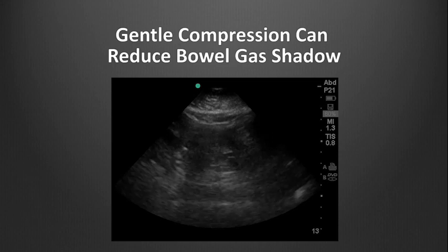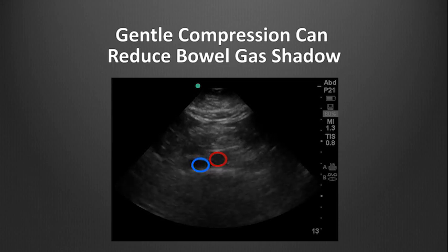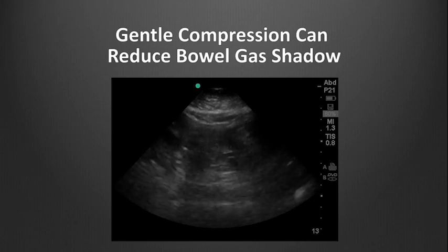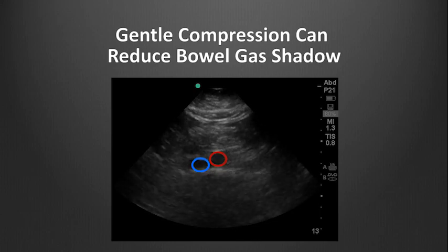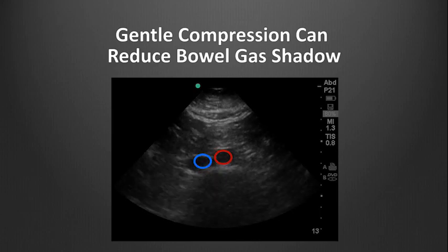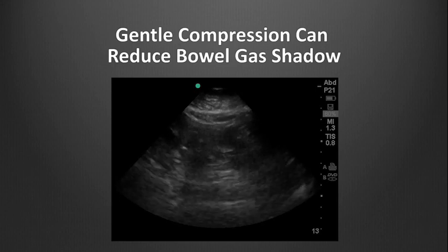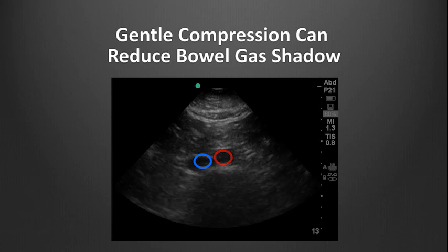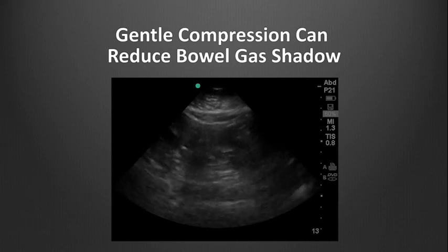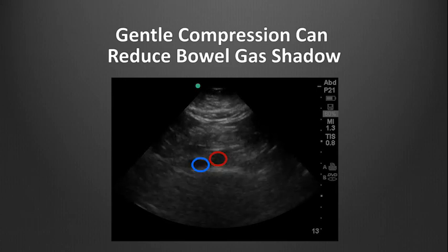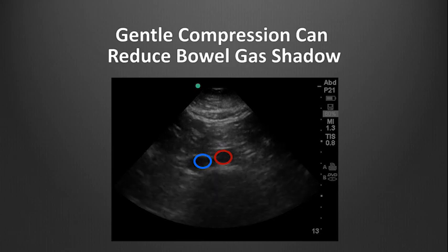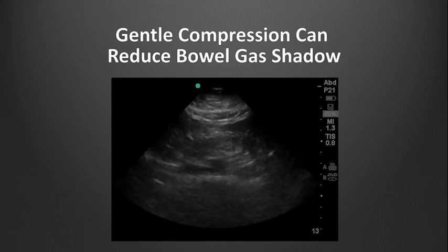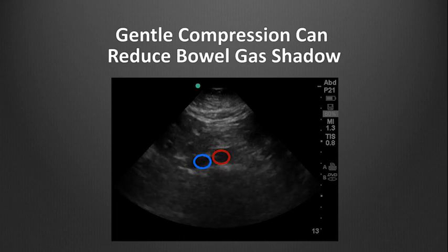Here, the operator is gently compressing the abdomen using the ultrasound probe, and this causes the aorta to be better visualized as the hypoechoic or dark pulsating circle in the center of the screen. The vertebral body shadow is a curved, white or hyperechoic rim structure in the center of the screen, with the two vessels in cross-section — the aorta and the IVC — as hypoechoic or dark circular structures superficial to the vertebral body.